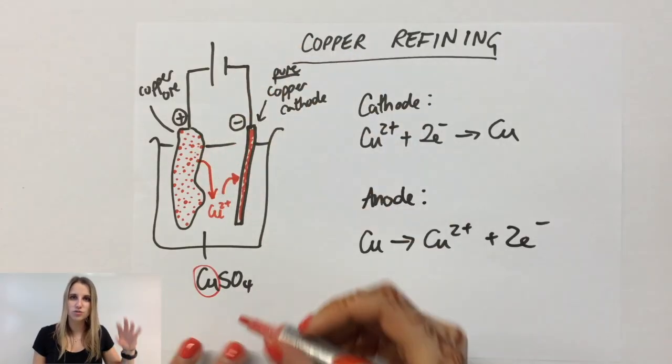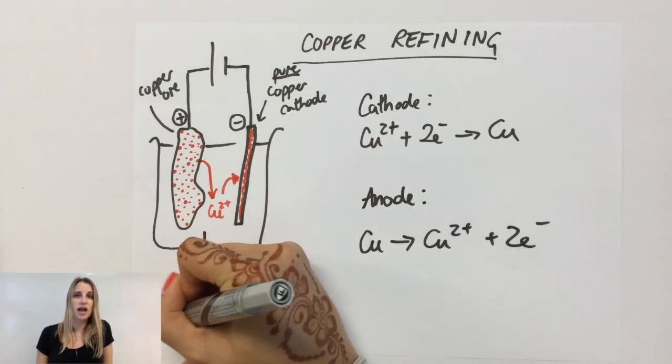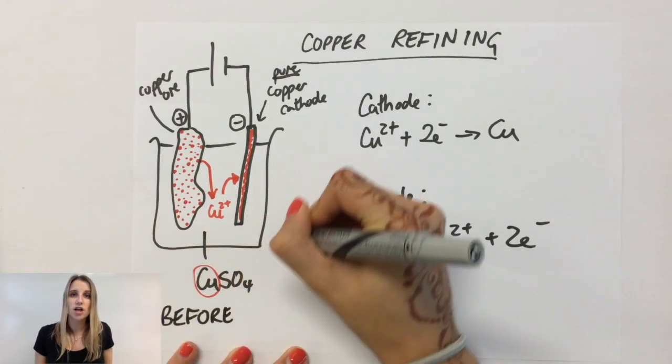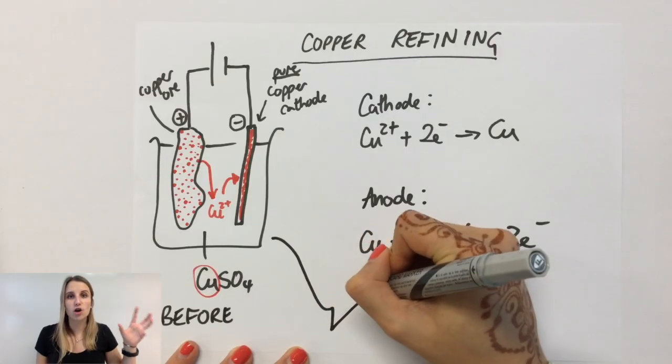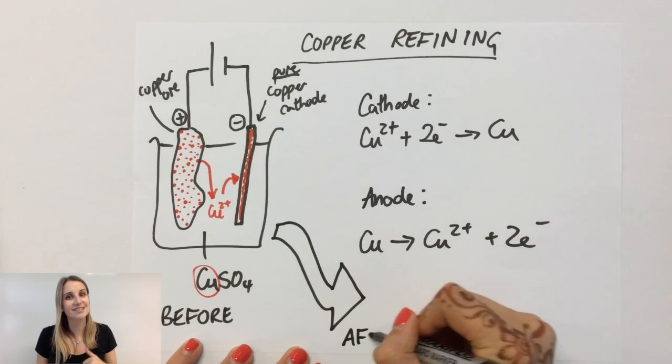Anything else, all the sand and other stuff that's in the rock, will just fall to the bottom because it's not going to get put into solution. This means I can separate the copper out of the rock because that turns into Cu2+ in the solution.